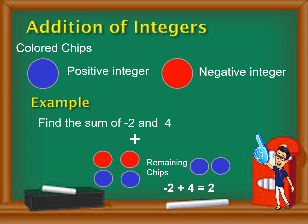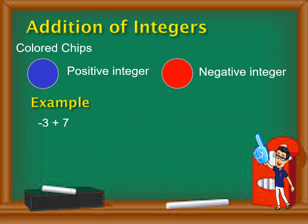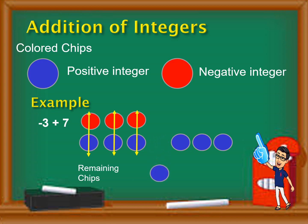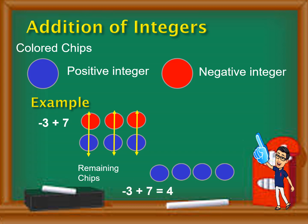Proceed with the next example: negative three plus seven. Negative three will be represented by three red chips, and seven will be seven blue chips. We arrange them so the zero pairs are matched up: one pair, another one, and the third — all equivalent to zero. The remaining chips are one, two, three, four blue chips, which is equivalent to positive four. Therefore, negative three plus seven is equal to four.